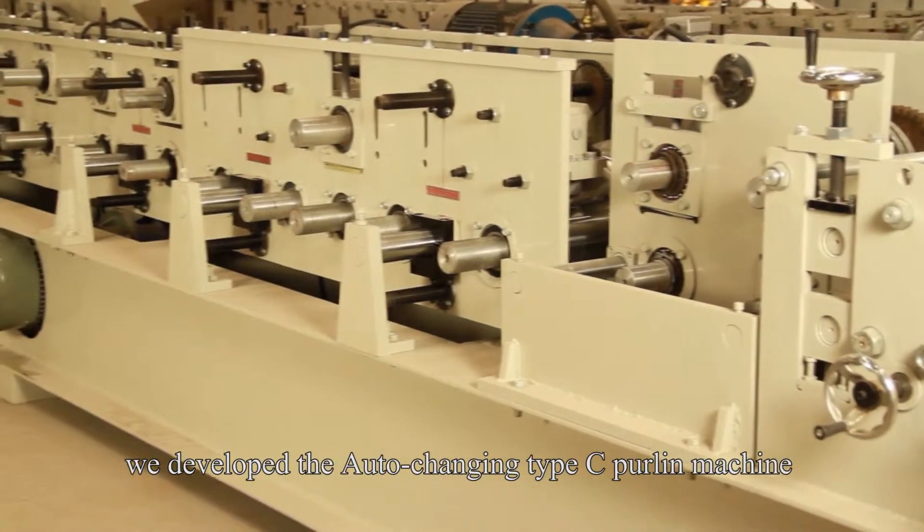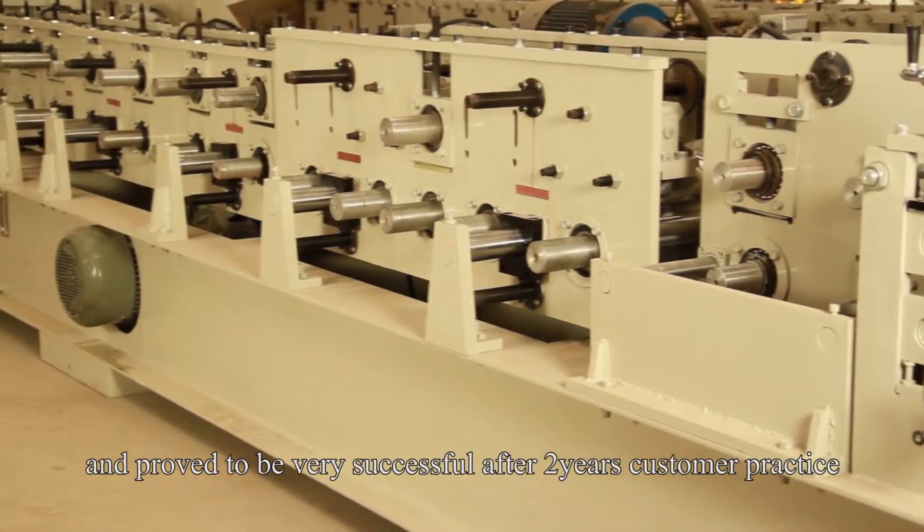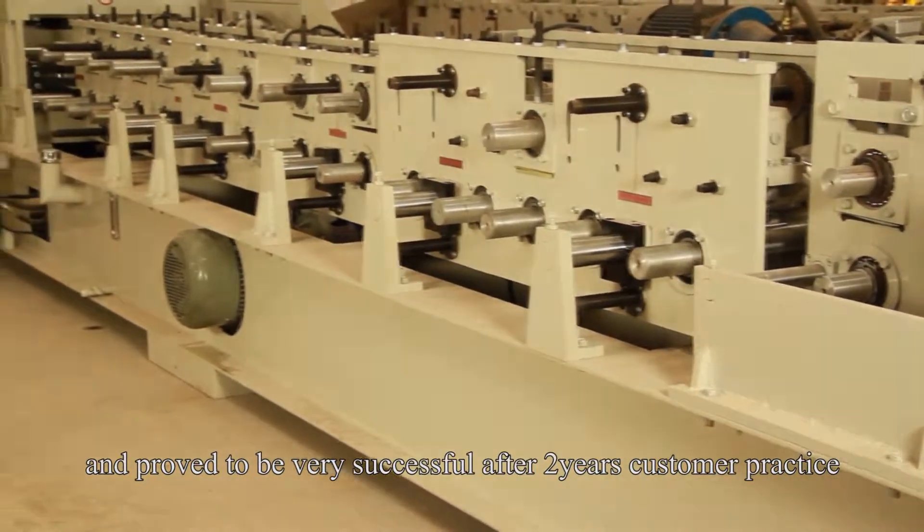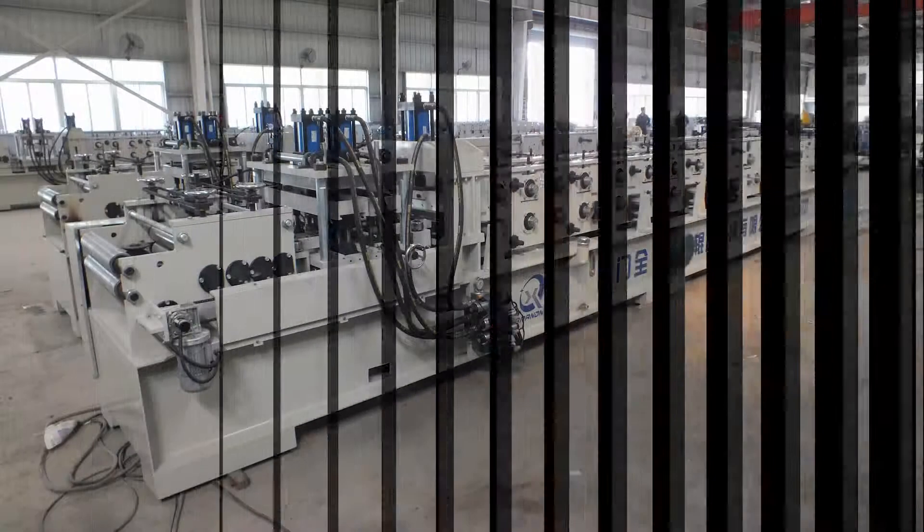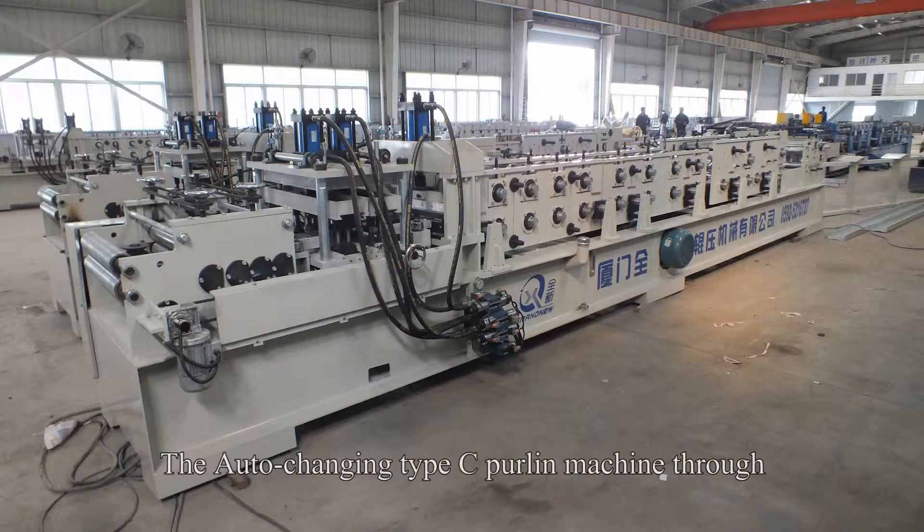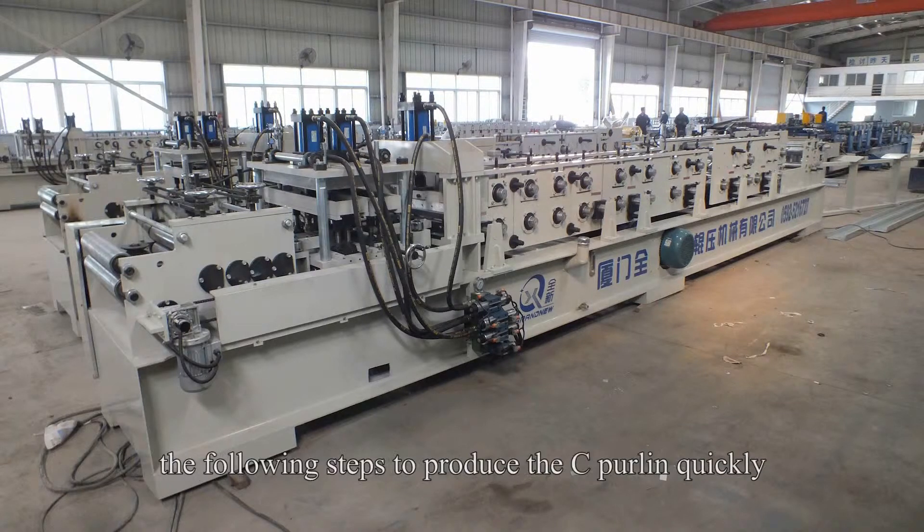We developed the Auto-Changing Type-C Perlin Machine and proved to be very successful after two years' customer practice. The Auto-Changing Type-C Perlin Machine follows the following steps to produce the C Perlin quickly.